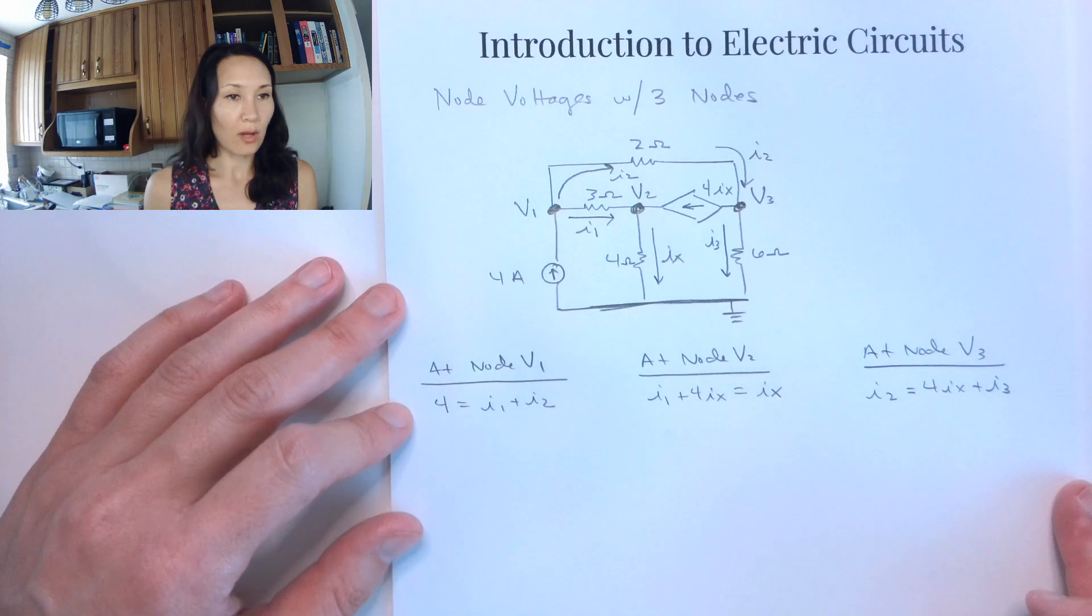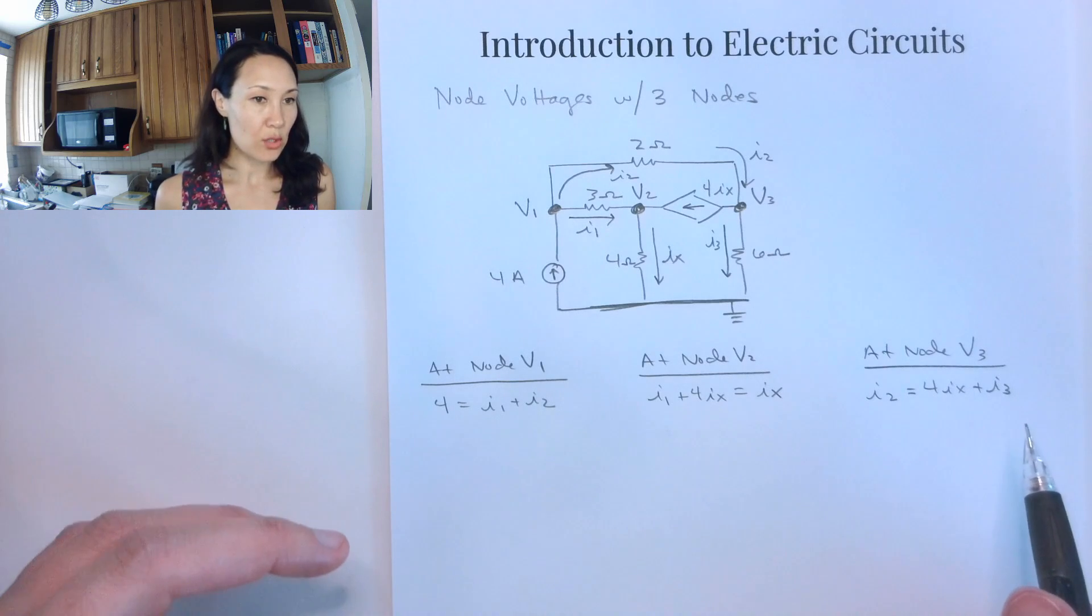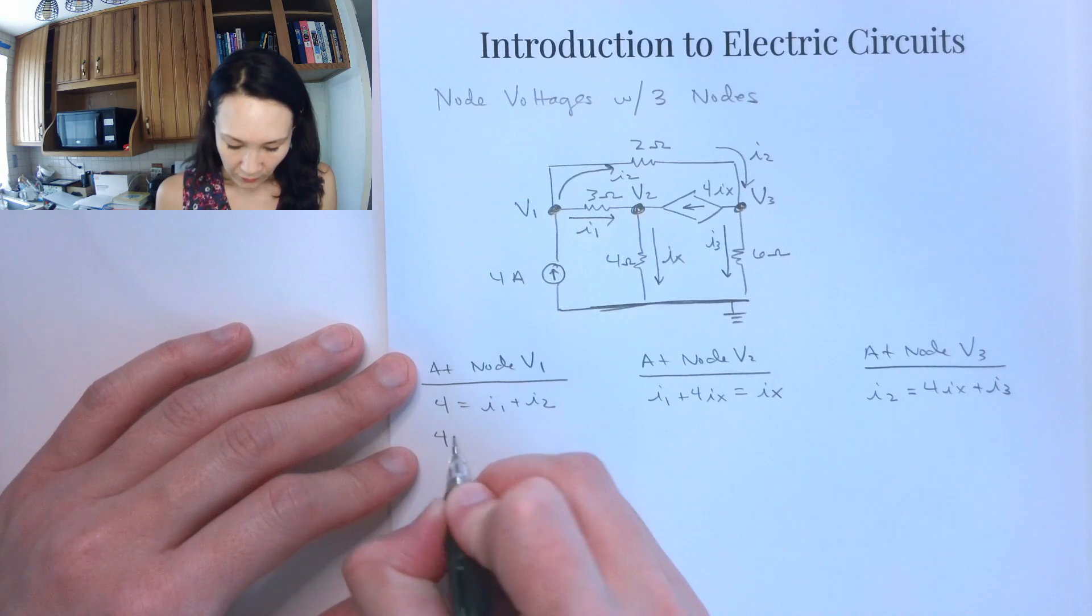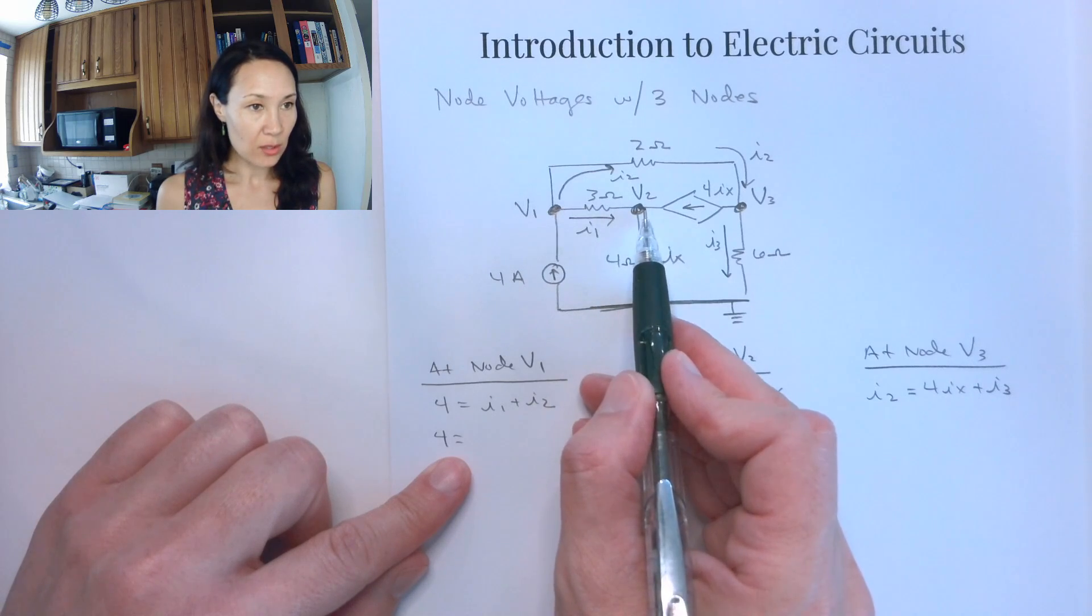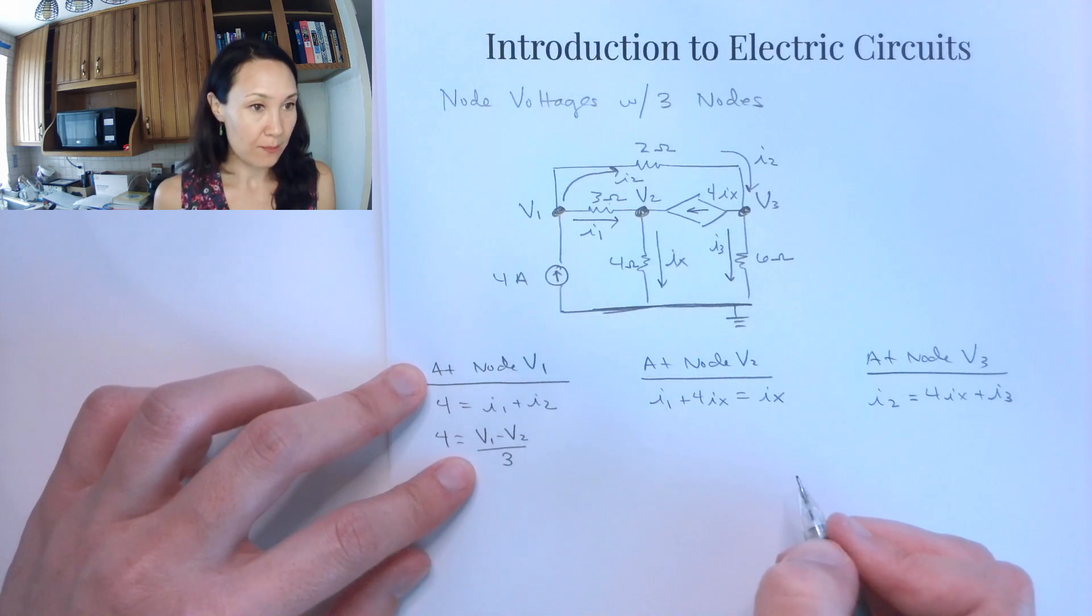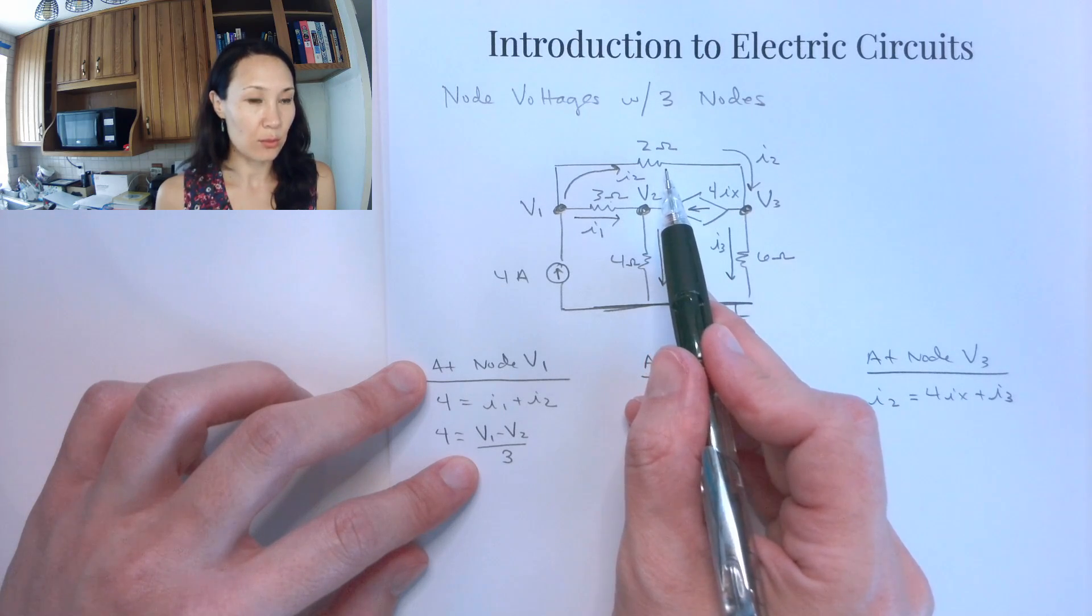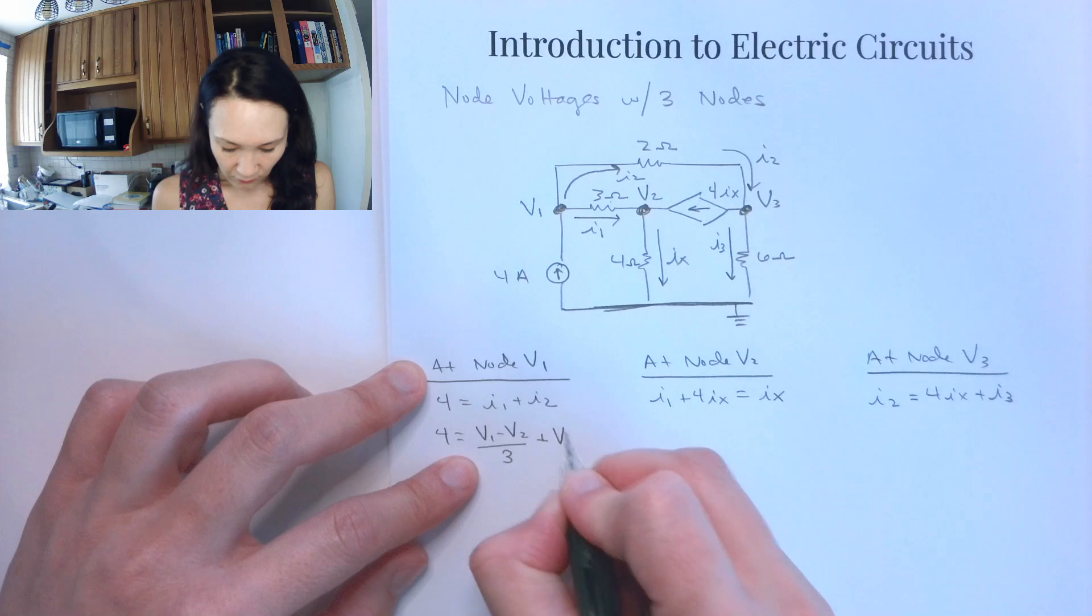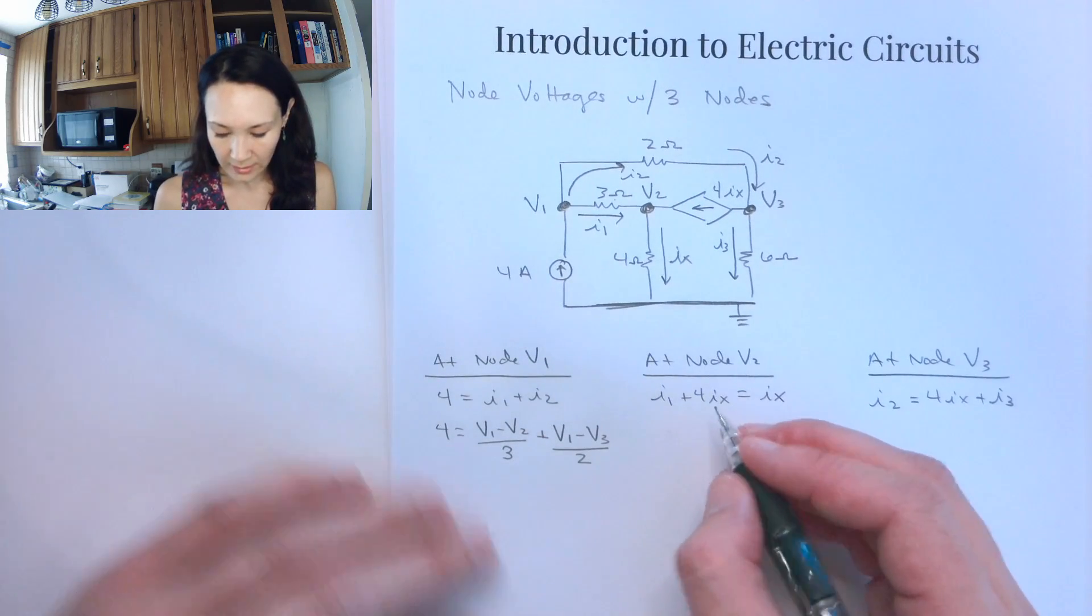So that was the next step for using the node voltage method to solve here. So now the next step is I want to rewrite all three of these equations instead of being in terms of currents in terms of our node voltages. So firstly, at node V1, I'm going to replace I1 with V1 minus V2 divided by the resistor between. So this is going to be V1 minus V2 divided by 3. I'm going to replace I2 with V1 minus V3 divided by the resistor between, which is 2. So this will be V1 minus V2 divided by 2 ohms. So now I've got my node voltage equation that I developed from my node 1 KCL equation.